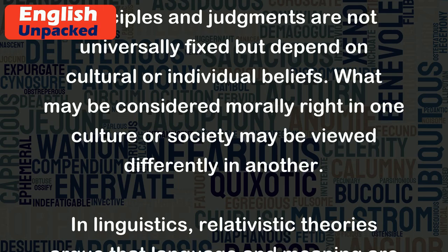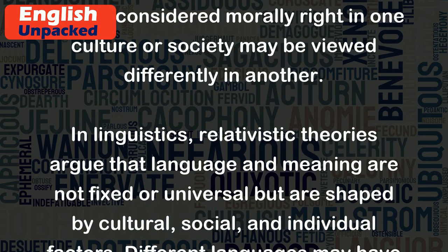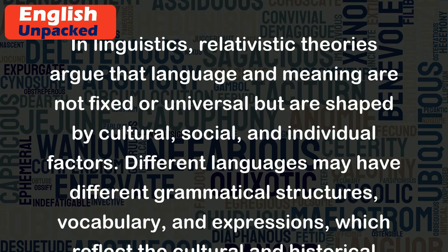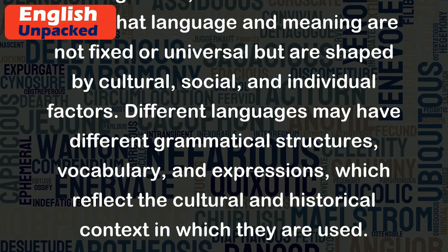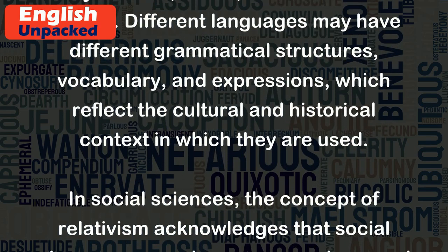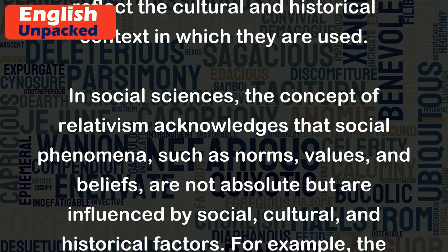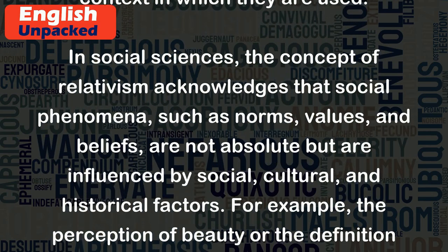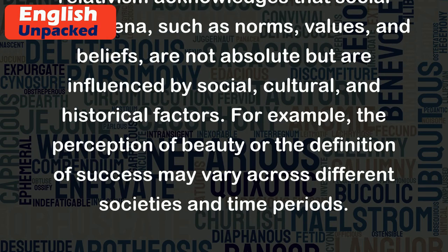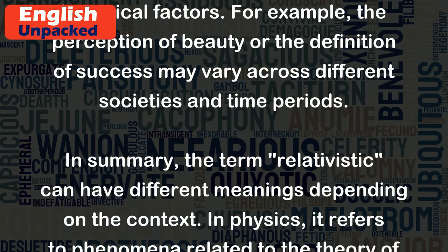What may be considered morally right in one culture or society may be viewed differently in another. In linguistics, relativistic theories argue that language and meaning are not fixed or universal but are shaped by cultural, social, and individual factors. Different languages may have different grammatical structures, vocabulary, and expressions, which reflect the cultural and historical context in which they are used. In social sciences, the concept of relativism acknowledges that social phenomena, such as norms, values, and beliefs, are not absolute but are influenced by social, cultural, and historical factors. For example, the perception of beauty or the definition of success may vary across different societies and time periods.